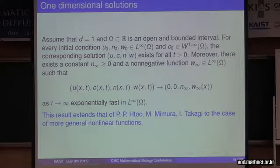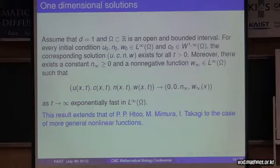After that we revisited the case of d equals one. In the case that d equals one, we know that what we expect is we always have existence, no blow-up. We revisit the result of Ito, Mimura, and Takagi in the case of more general functions with the hypothesis given here. Assume that d equals one and omega is an open bounded domain with a smooth enough boundary. For each initial condition u_0, n_0, w_0 in L infinity, and c_0 slightly smoother in W^{1,infinity} of omega,